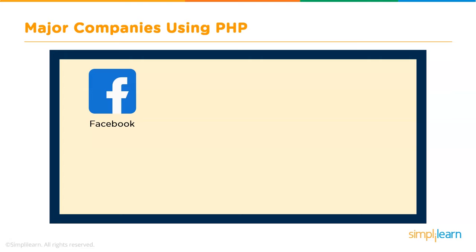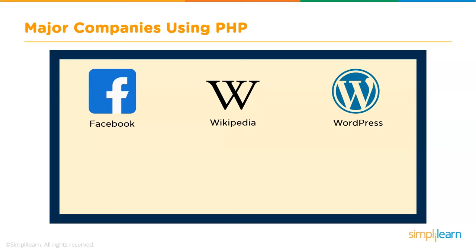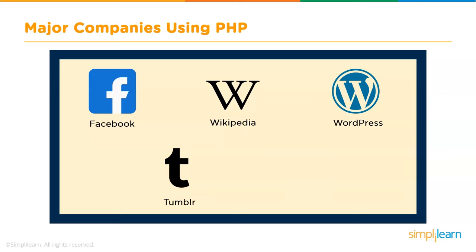What is the one site everyone goes to for information? Correct — it's Wikipedia, and it is written in PHP too. Platforms like WordPress, which are used to create beautiful websites, are also based on PHP. Blogging and social media channels such as Tumblr and even multi-service platforms like Yahoo, which face huge amounts of data traffic every day, use PHP to function.